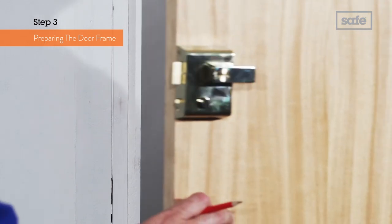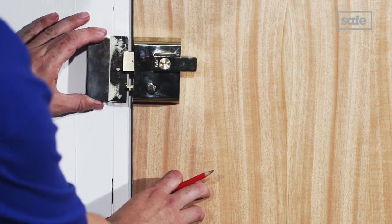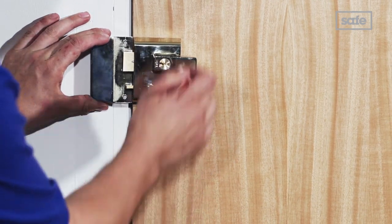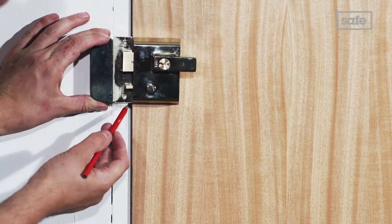Now close the door and using the lock case as a guide, mark the position of the staple, sometimes also known as the keep, on the door frame.